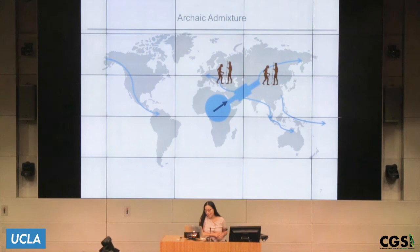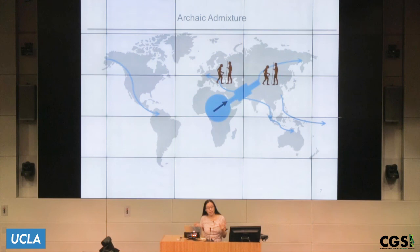From the fossil record we know that Neanderthals lived in Eurasia, and we know that they coexisted with modern humans — when humans left Africa, they lived in the same place for a long while. One of the big questions is: did humans and archaic humans interbreed? And one question still to be answered is what happened to the Neanderthals.